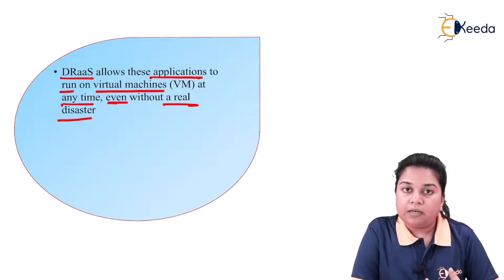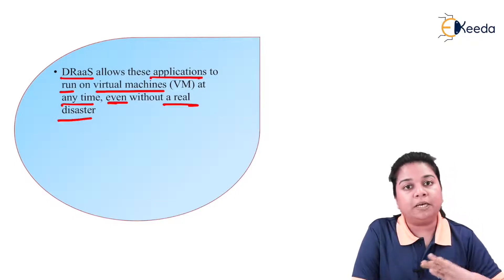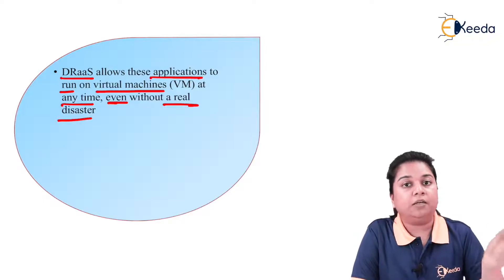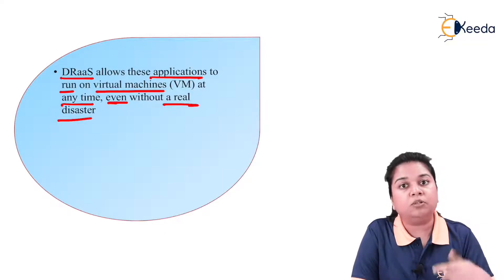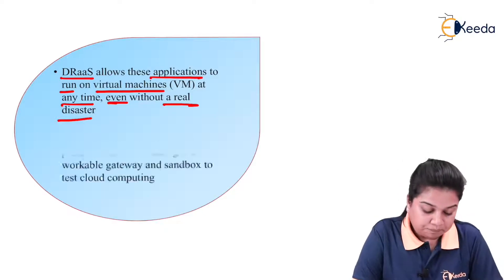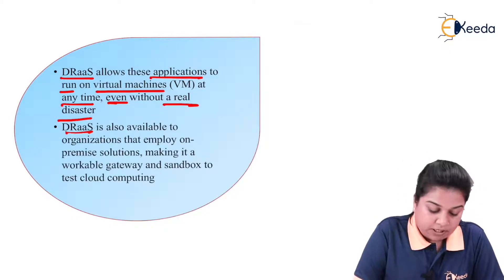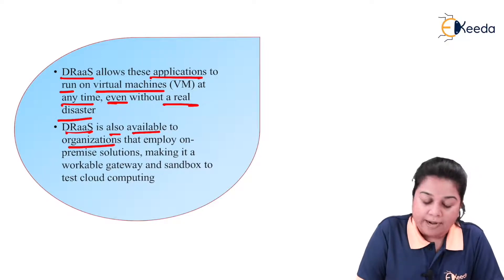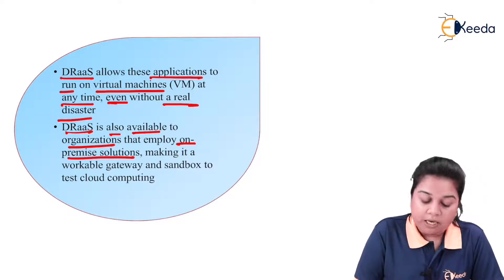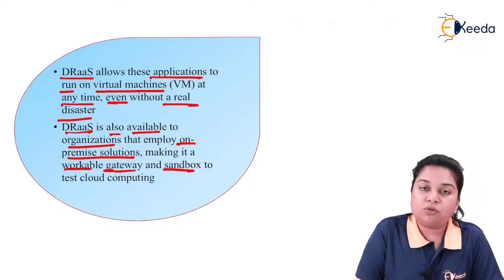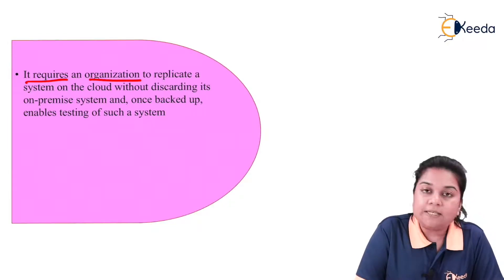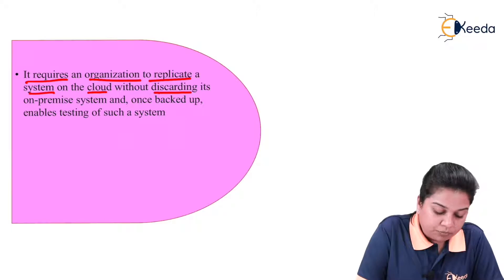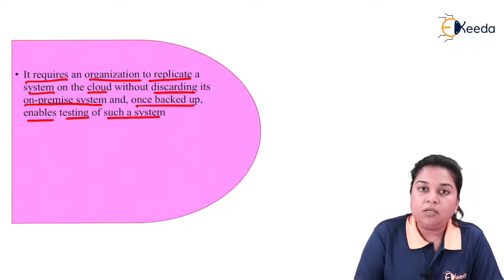Similarly, in disaster recovery as a service, it replicates data to various data centers so that if a disaster occurs in one data center, business continuity is still maintained. It is also available to organizations that employ on-premise solutions, making it a workable gateway and sandbox to test cloud computing. It requires an organization to replicate a system on the cloud without discarding its on-premise system, and once backed up, enables testing of such a system.